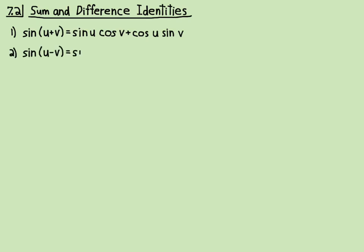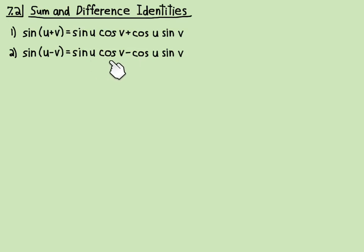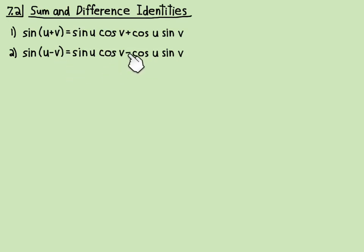For the difference identity, it's exactly the same, except that in between the two terms on the right there's a minus. So between u and v on the left there's a minus, and between the two terms on the right there's a minus. Compare that with the one above — that's the only difference.